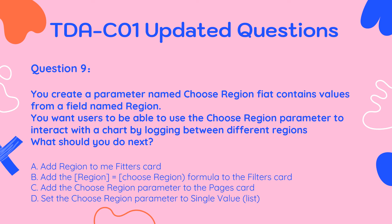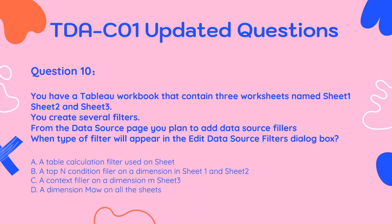Question 9. You create a parameter named ChooseRegion that contains values from a field named Region. You want users to be able to use the ChooseRegion parameter to interact with a chart by toggling between different regions. What should you do next? A. Add Region to the Filters Card. B. Add the Region equals ChooseRegion formula to the Filters Card. C. Add the ChooseRegion parameter to the Pages Card. D. Set the ChooseRegion parameter to Single Value List.